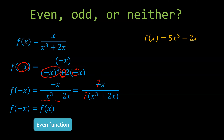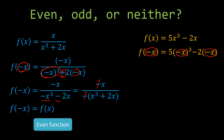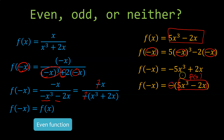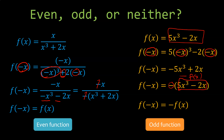Here's another example: f of x is equal to 5x to the third minus 2x. Again, we look at f of negative x — what happens on the other side of zero. You put negative x in wherever x is. Negative to the third power stays negative, and negative times negative is positive, so f of negative x equals negative 5x cubed plus 2x. Factoring out a negative gives us the original function inside the parentheses, so f of negative x is the opposite of f of x — therefore it is an odd function.